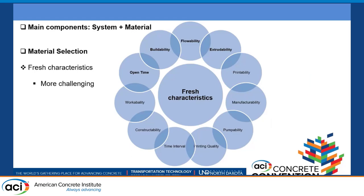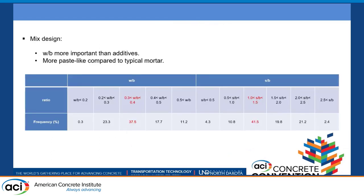Printing system and material are two main components of this technology. As for material selection, fresh characteristics are mentioned to be more challenging to control. We can mention open time, buildability, flowability, and extrudability as the most important to control. Talking about the mix design, water-to-binder ratio is important, along with the additives that we use.